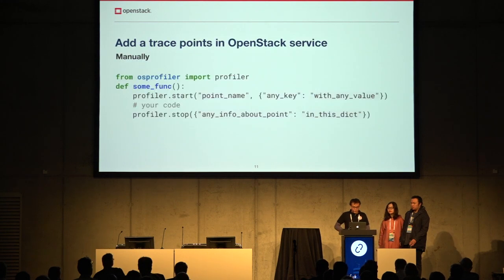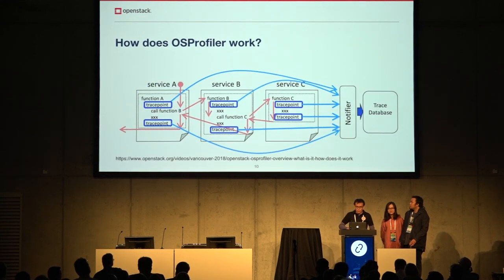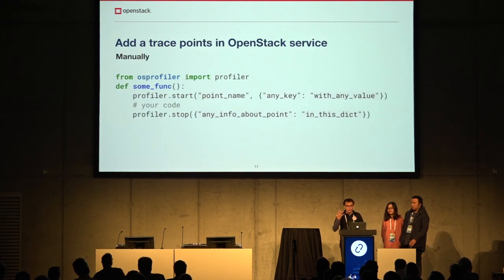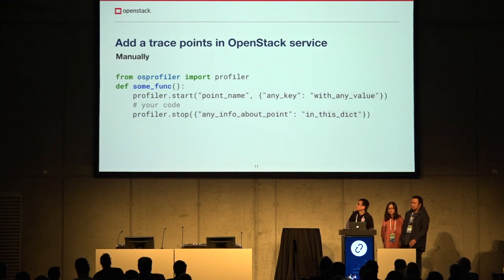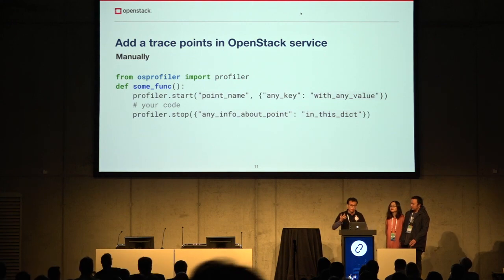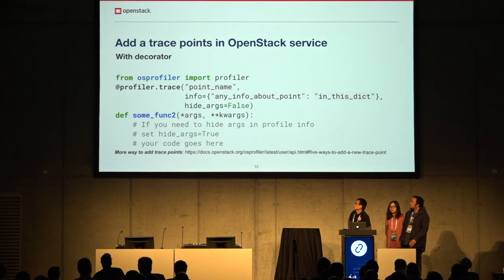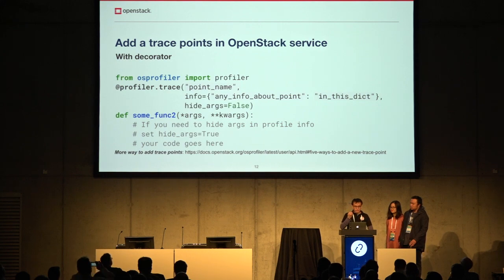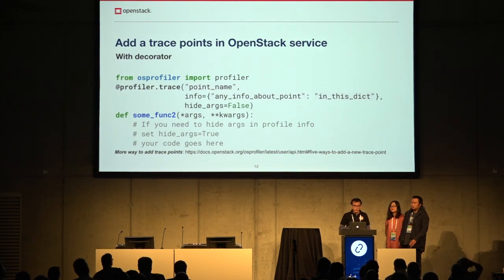We have many ways to add trace points to OpenStack services — actually five ways, but here we show two. The first is manually: at the start and end of a function you add the point name and any key-value pairs you want to log. With a decorator, you trace from the start of the function and OS profiler handles everything. You can also trace your class or even with your metaclass.